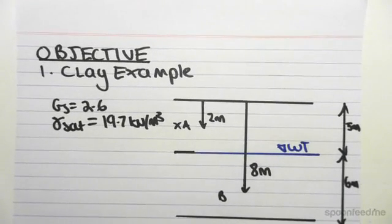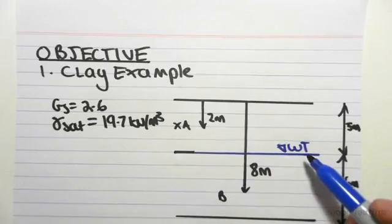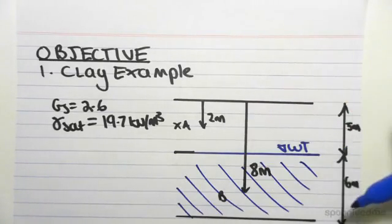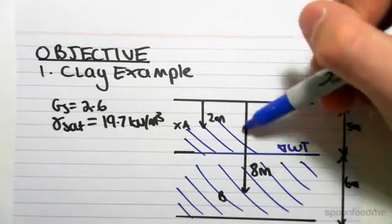So the reason that clay is different to sand is because if we have the water table here, not only is everything below becoming saturated, but actually everything above is saturated as well.